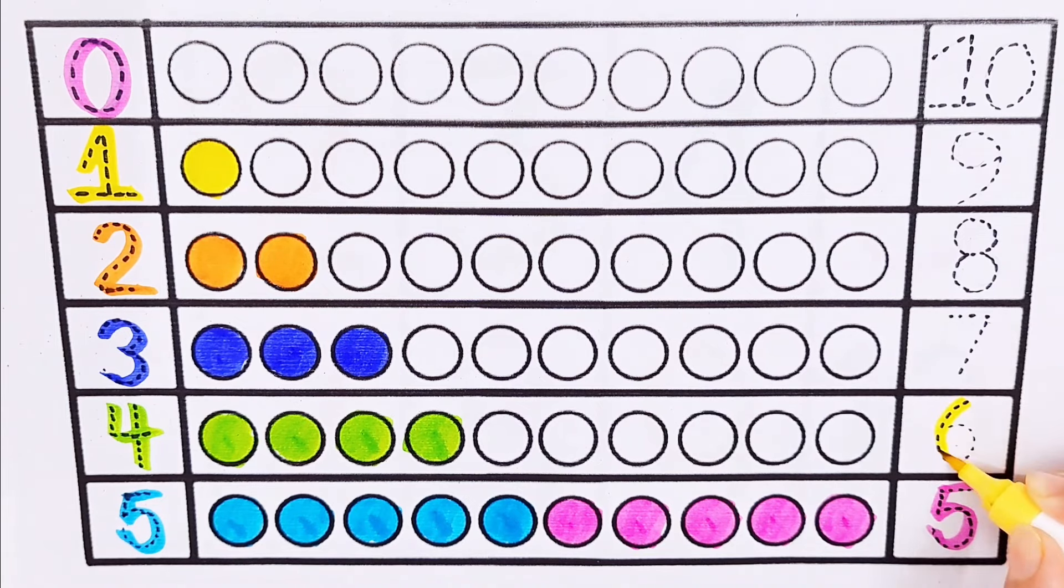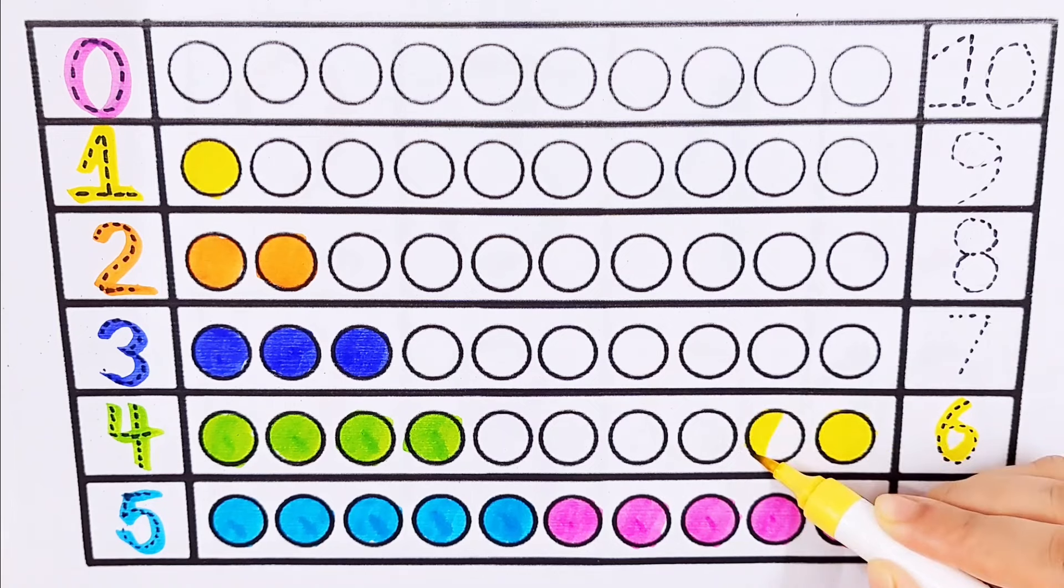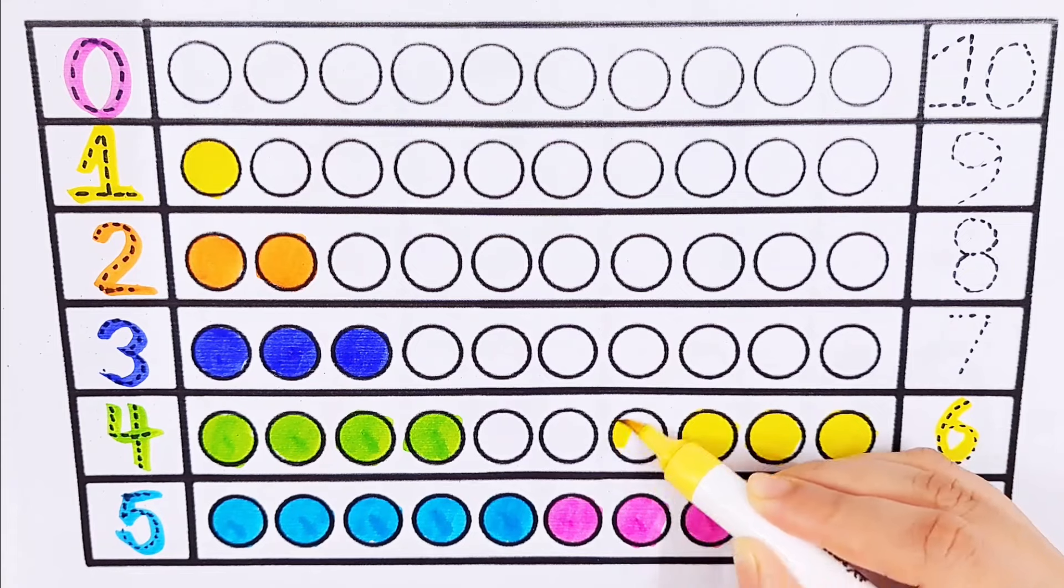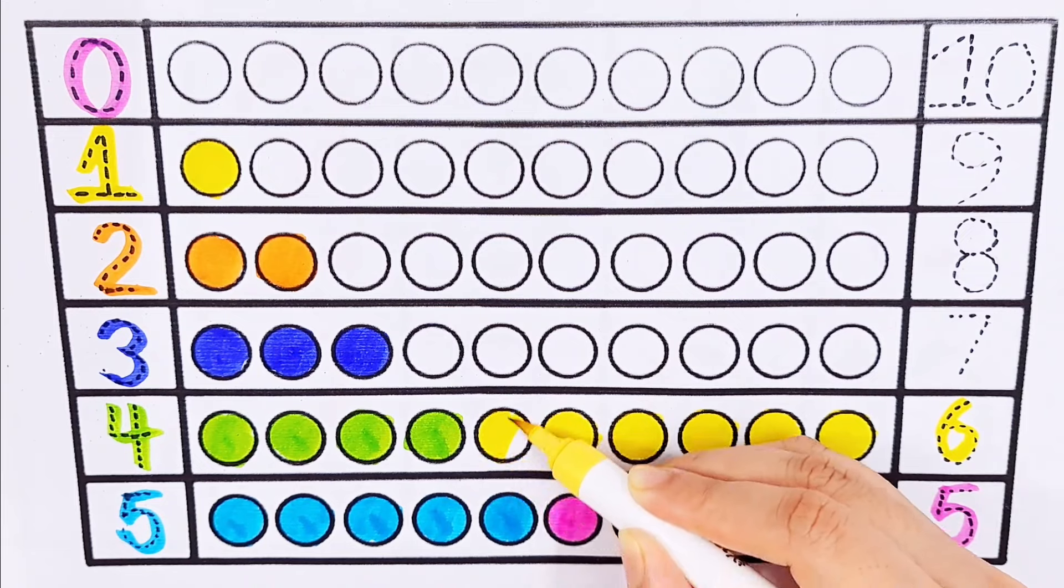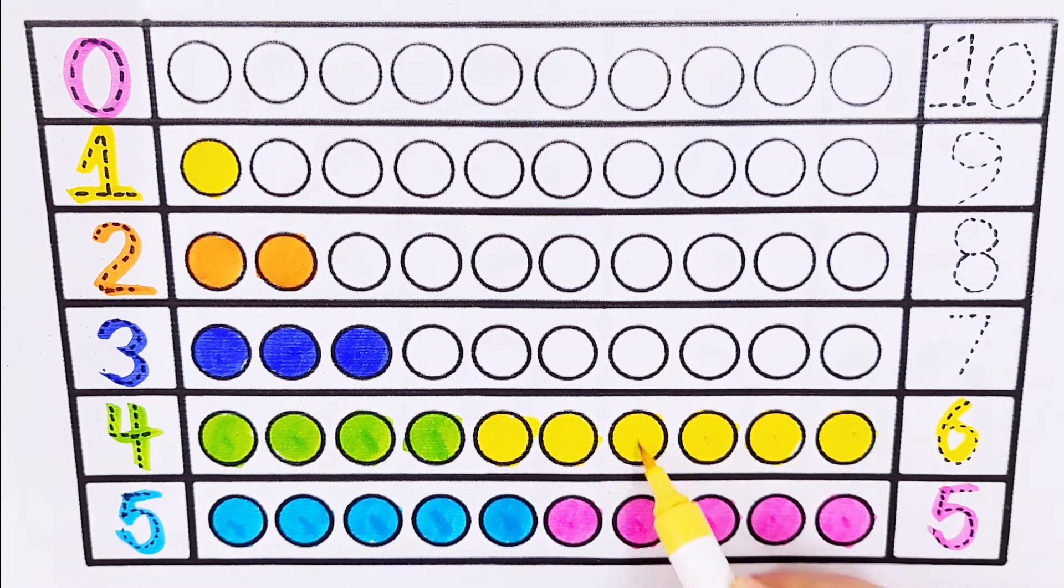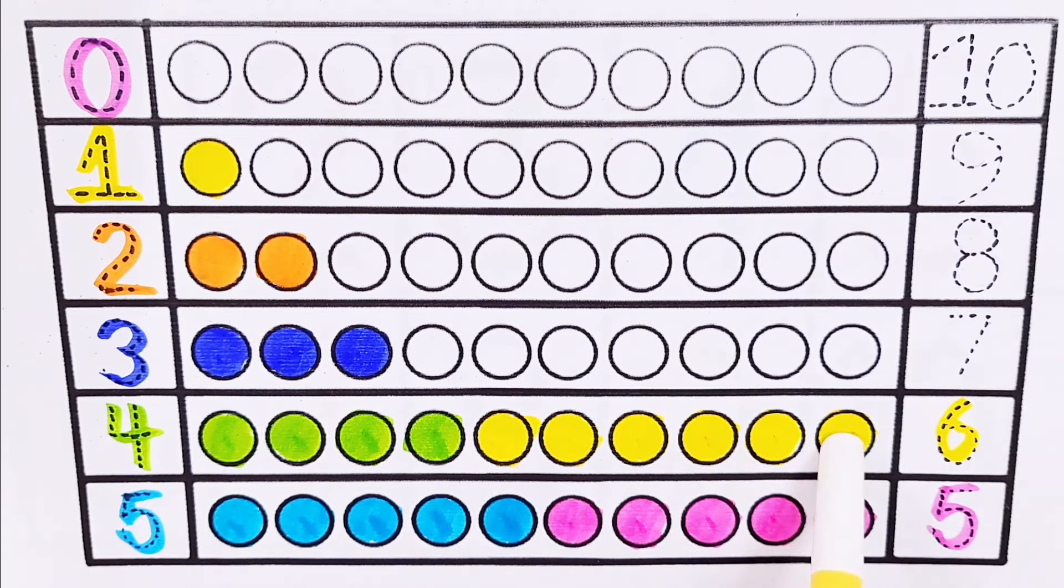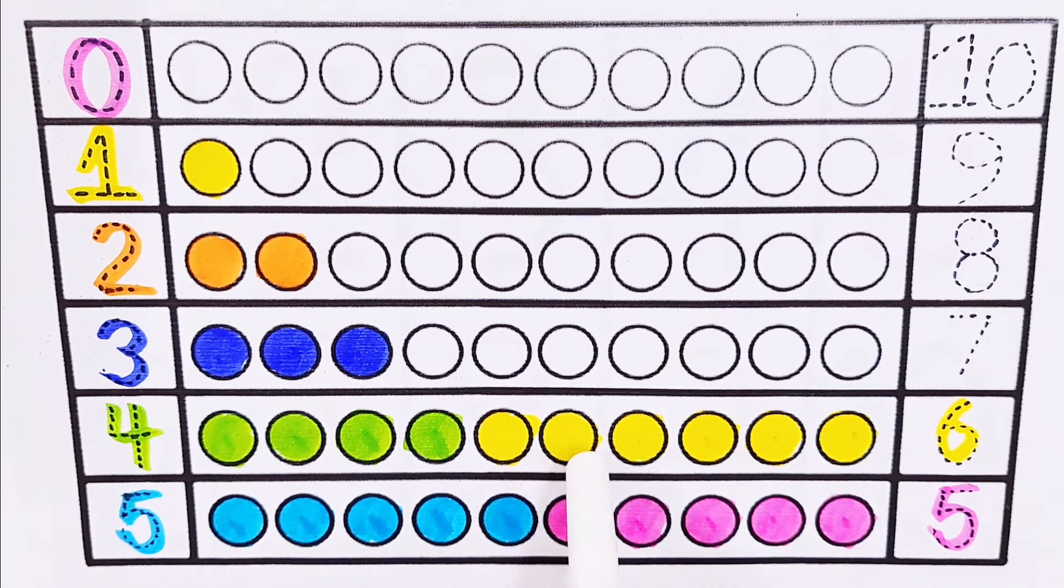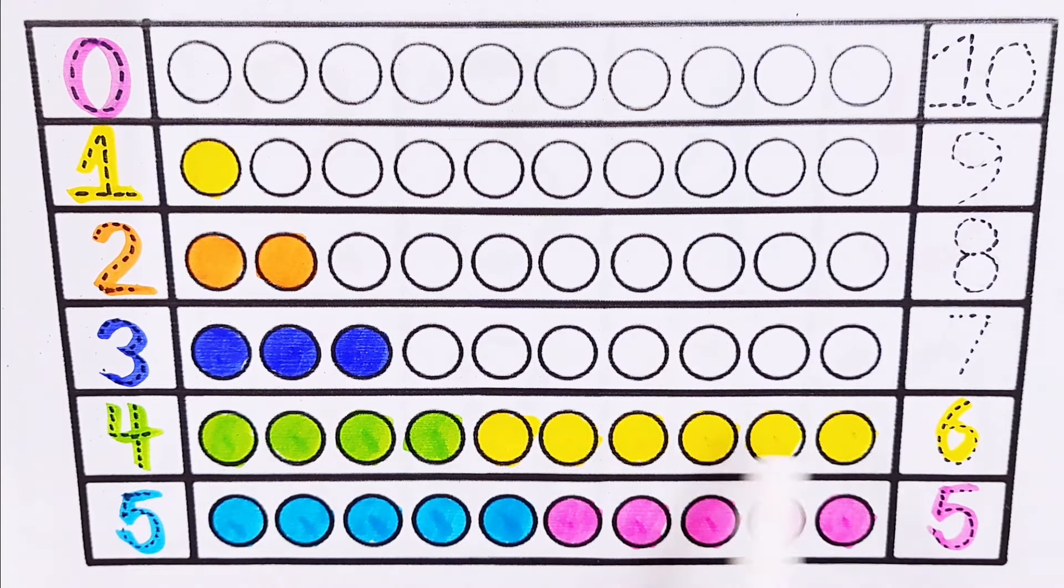Number 6: 1, 2, 3, 4, 5, 6. 4 plus 6 equals 10. 1, 2, 3, 4, 5, 6, 7, 8, 9, 10.